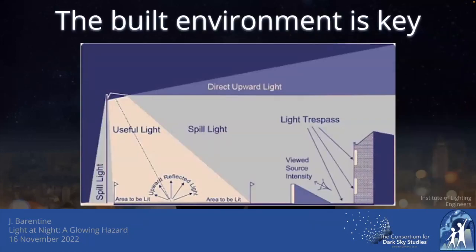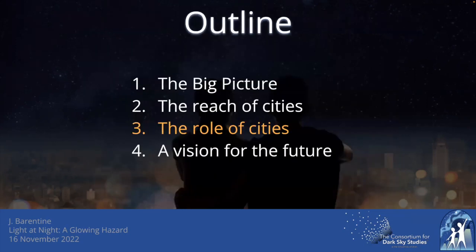When we look at the built environment it is really key in coming to solutions. We want to target the useful light — put the light where it's needed at night, keep it away from areas where it's not, get the timing of the light correct so it's there when people need it and reduced or extinguished when they're not. We want to reduce the unfortunate side effects labeled 'light pollution,' which includes spill light trespassing into buildings and places where it's not wanted, and the direct upward light that becomes sky glow and makes it difficult to see the stars.